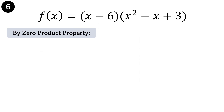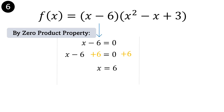Next example: f of x equals the quantity of x minus 6 times the quantity of x squared minus x plus 3. By applying the zero product property, starting with the first binomial, x minus 6 is equal to 0. Getting the inverse of negative 6, we have x minus 6 plus 6 equals 0 plus 6. Simplifying, x therefore is 6. On this trinomial, x squared minus x plus 3, it is not factorable. Therefore, we couldn't convert it into the product of 2 binomials.